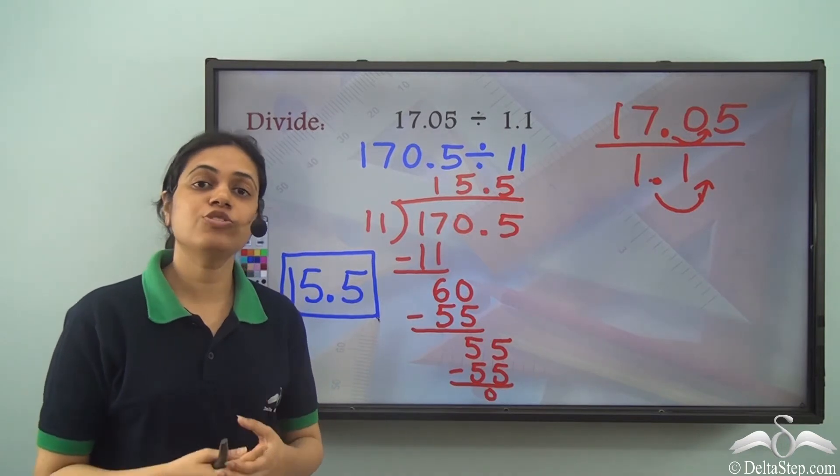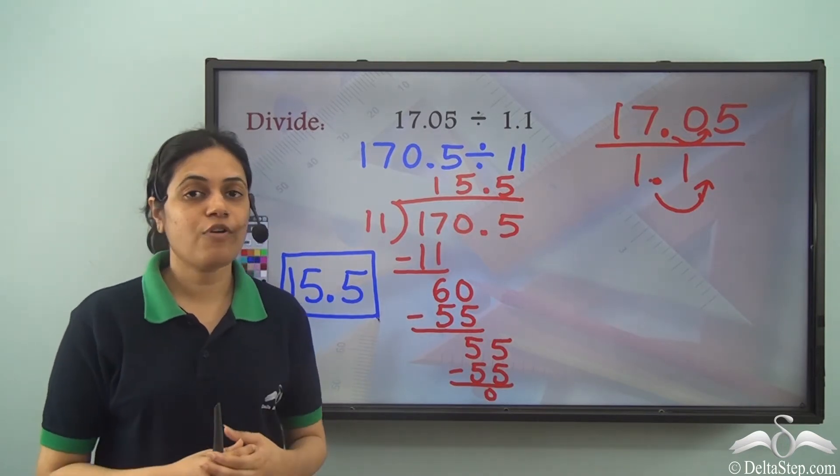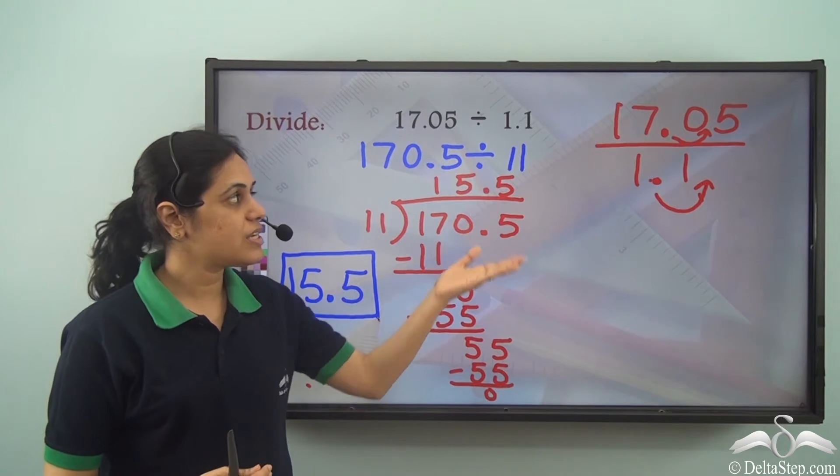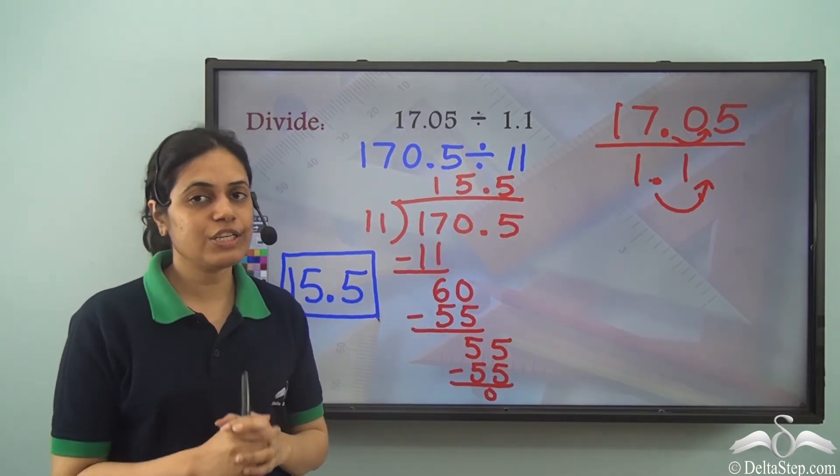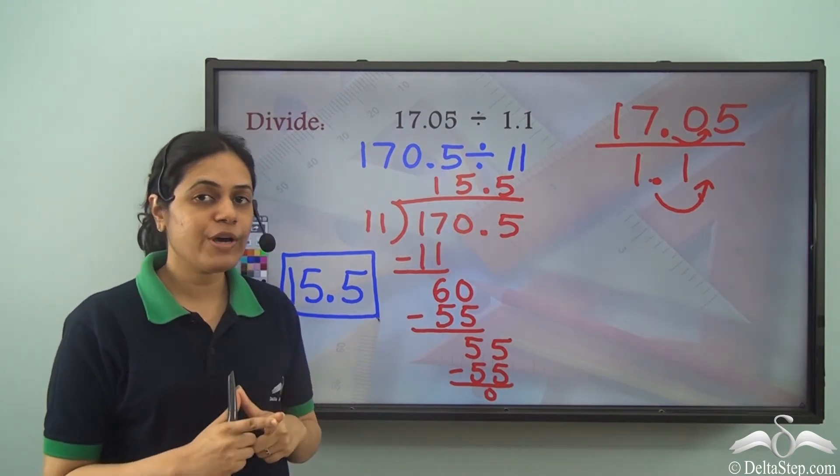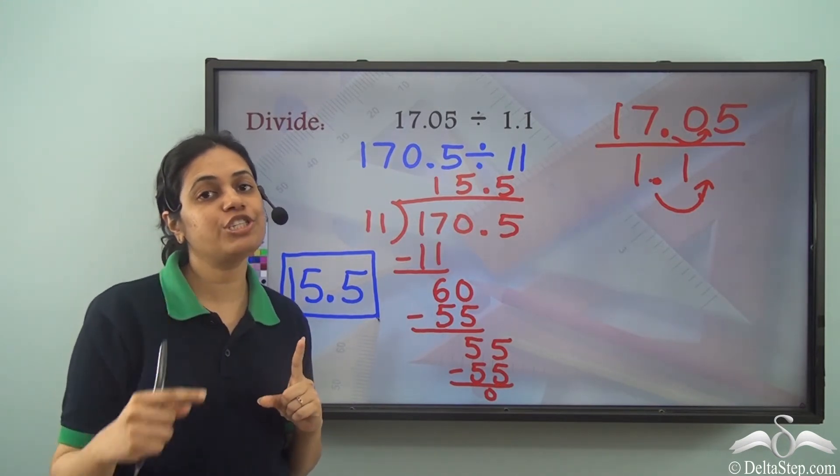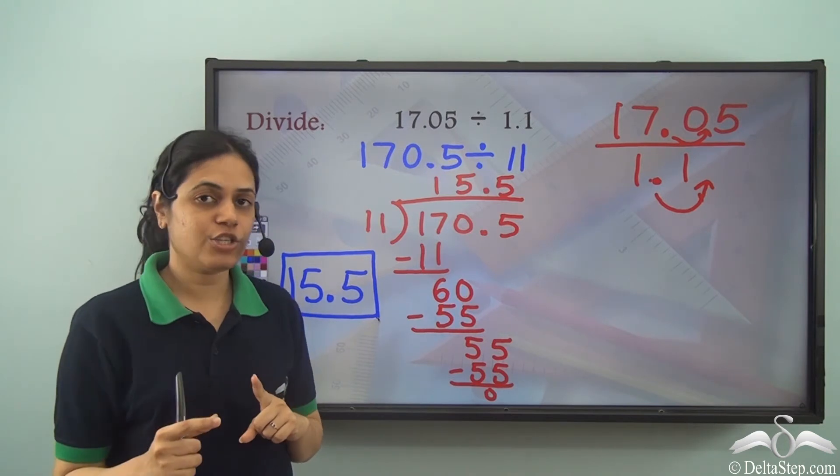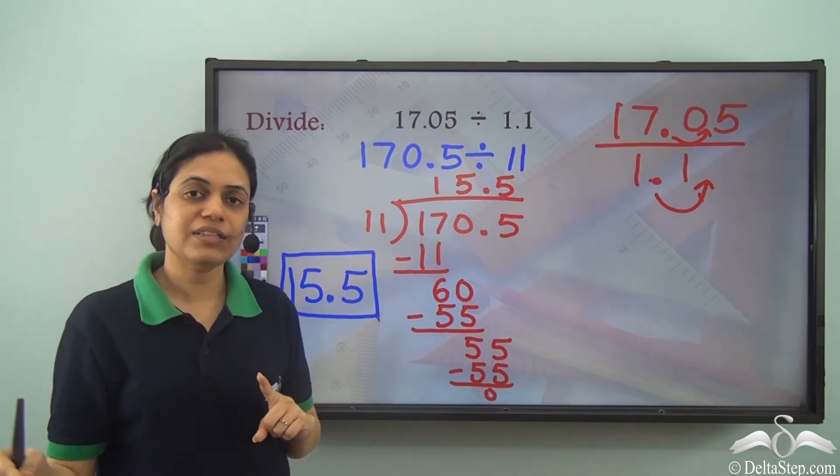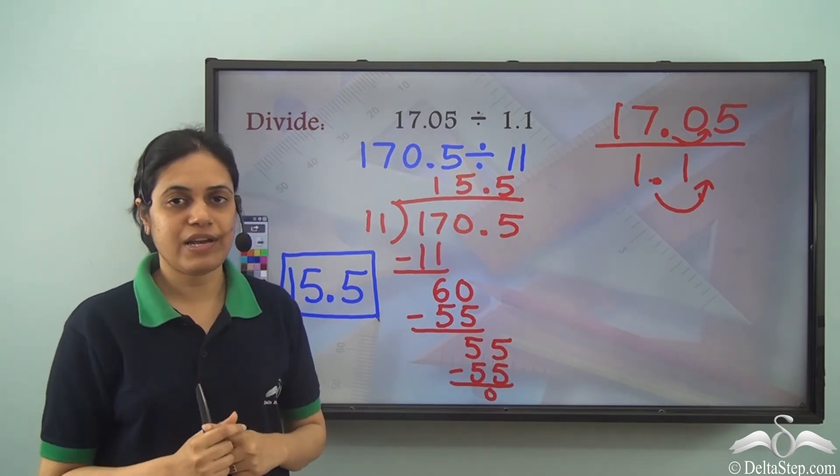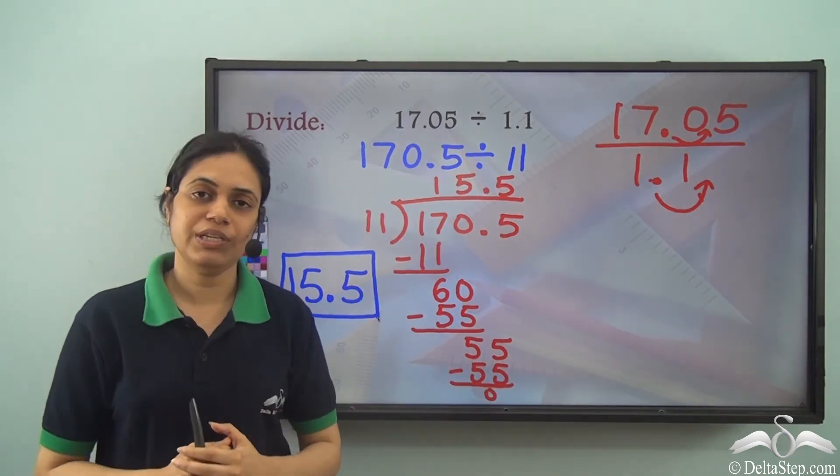So this is how we can do long division involving decimal numbers. If there is a decimal point in the divisor, we first need to remove the decimal point. So the number of places the decimal point shifts to the right in the denominator, the same number of places it will shift to the right in the numerator as well. And then we can divide it normally.